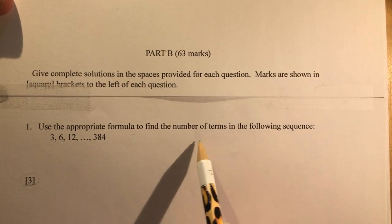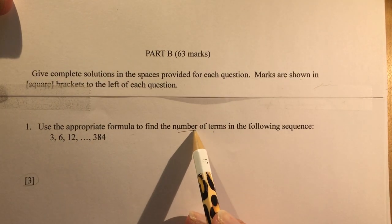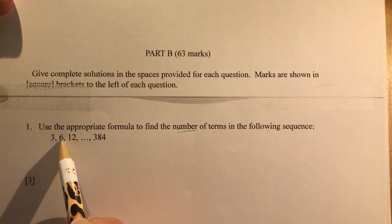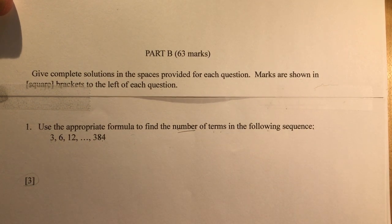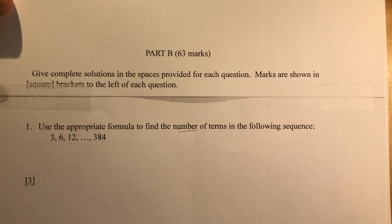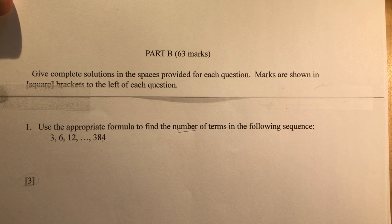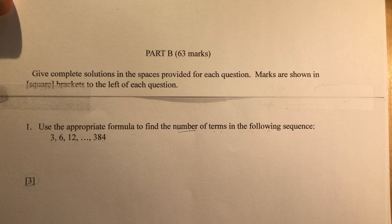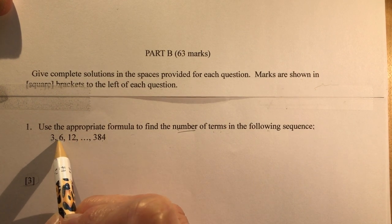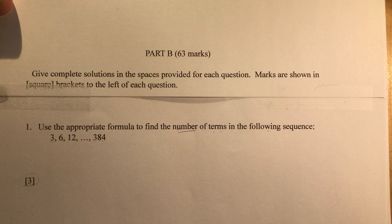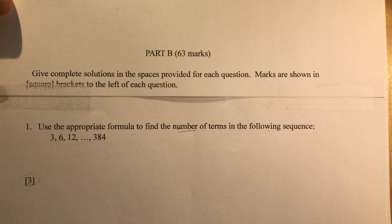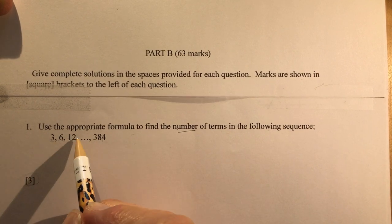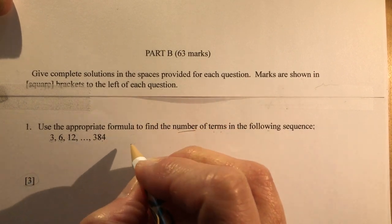Part B, 63 marks. Give complete solutions in the spaces provided for each question. Always important to check the marks to make sure you're doing enough work. So it says use the appropriate formula to find the number of terms, so I'm looking for n in the following sequence: 3, 6, 12, 384. The first thing I want to do is determine what type of sequence I'm dealing with. It's definitely not arithmetic. I'm multiplying by 2 as I go from left to right here, so it's geometric.